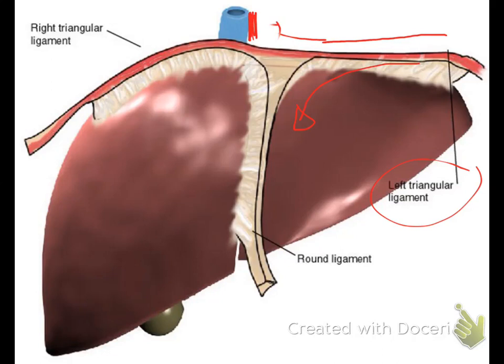This is the right triangular ligament, which attaches the liver to the lower border or lower aspect of the right hemisphere of the hemidiaphragm.